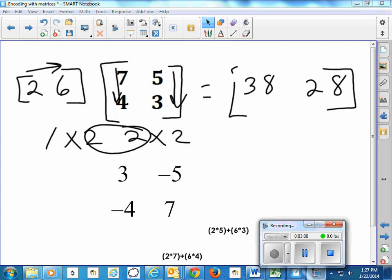So anytime we multiply matrices, this is a 1 by 2, multiplying by a 2 by 2. These two numbers in the middle have to be the same to be able to multiply.